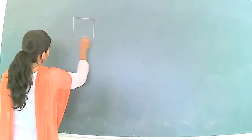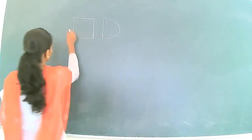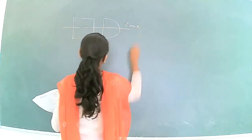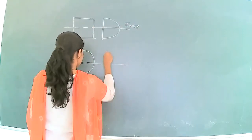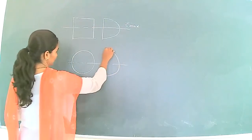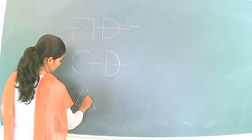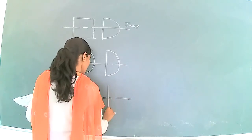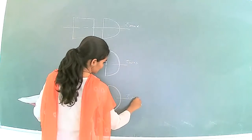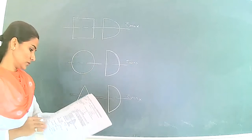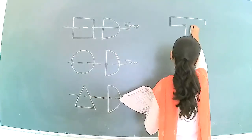Here is the shear stress distribution diagram for the rectangular cross section. And here is the distribution diagram for the triangular section. The style name is V, and for the standard I-section with its cross-sectional area, the distribution diagram follows accordingly.